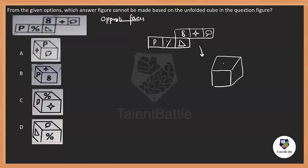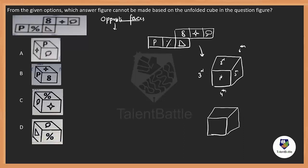Opposite faces on a cube are always the alternate symbols in the unfolded layout. So: P is opposite to the right-angle triangle, 8 is opposite to the message symbol, and the percentage sign is opposite to the star. These are our three opposite-face pairs.